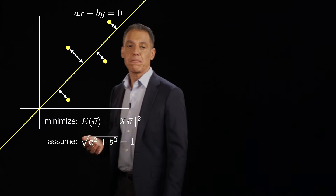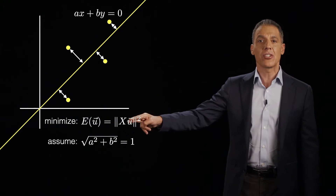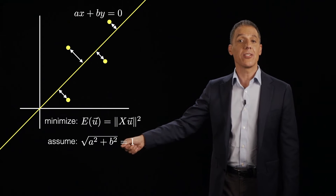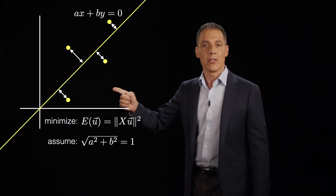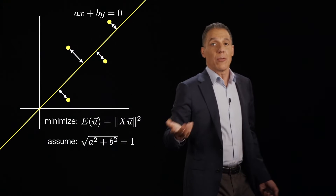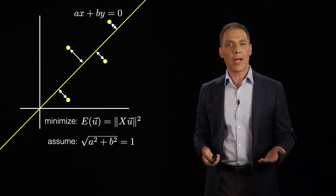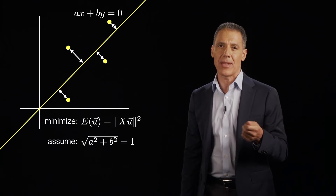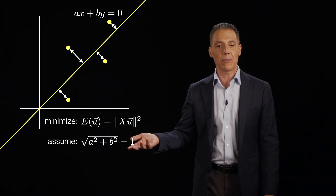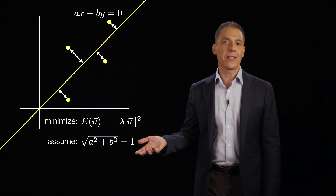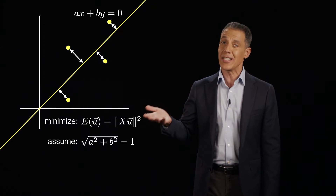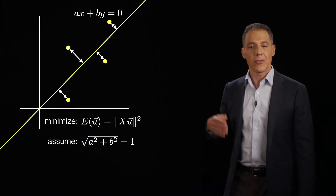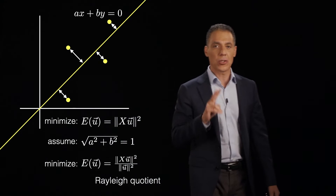We need to add a constraint. We want to minimize the quadratic error function subject to the assumption that U — made up of A and B — has unit length: the square root of the sum of squares of its two components equals one. There are two ways to do this. One is the Rayleigh quotient, which minimizes the same numerator but divides by the vector norm of U squared, penalizing deviations from unit length. The other is Lagrange multipliers.